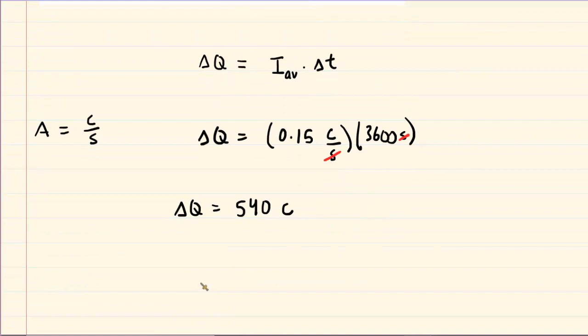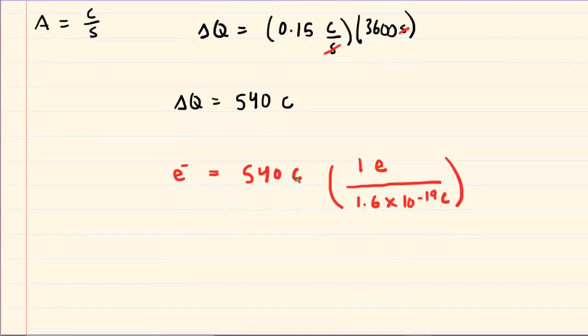For the number of electrons we can do the following. We can take the charge 540 coulombs, and when we have one electron the magnitude of charge on that one electron is 1.6 times 10 to the negative 19th coulombs. By setting up the conversion in this manner, the coulombs will cancel out leaving us with the desired unit of electrons.